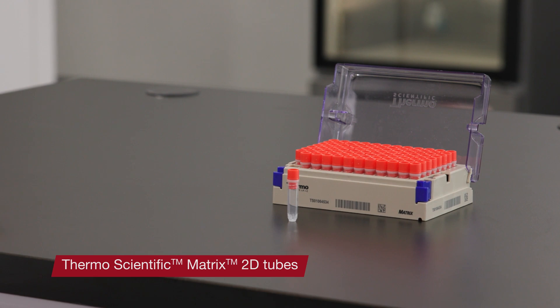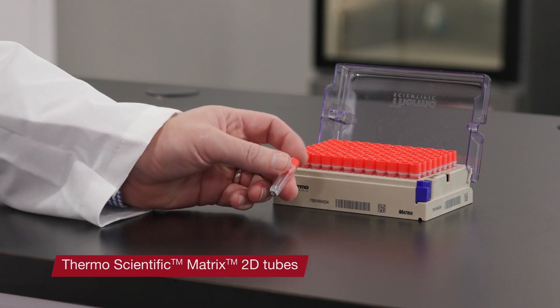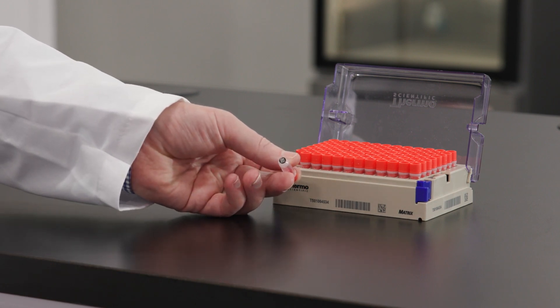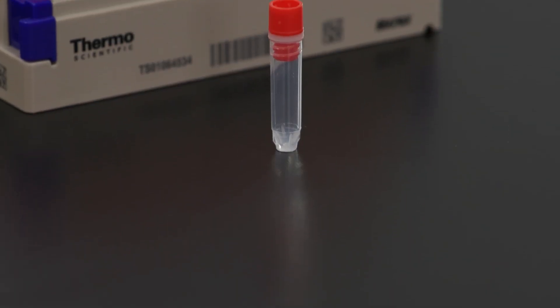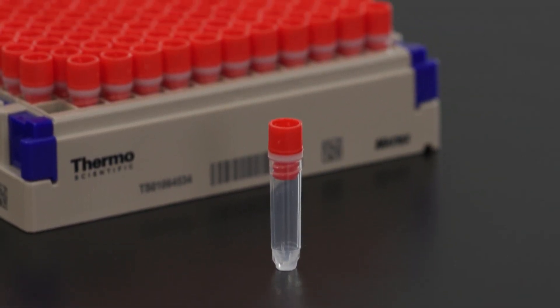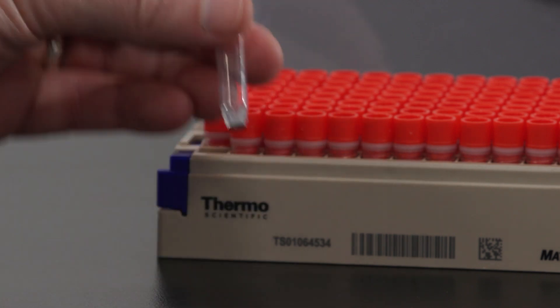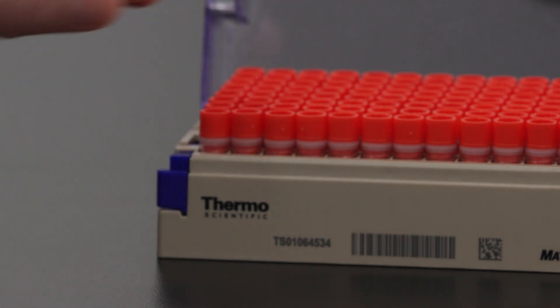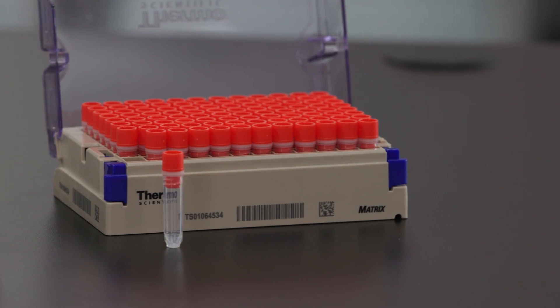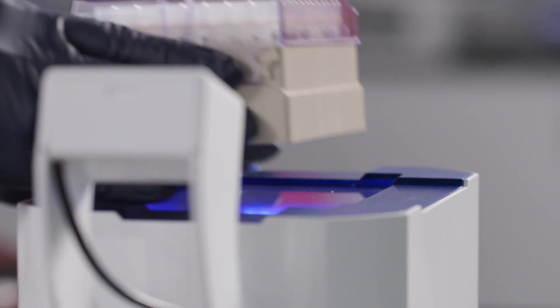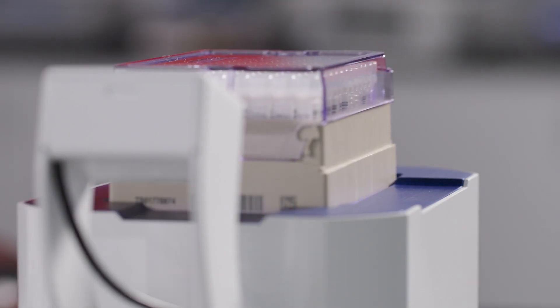The final racks we'll be discussing today are specialty racks that couple with the ThermoScientific Matrix 2D tubes. If you're looking for a secure traceable solution, the Matrix 96 format 2D barcode storage tubes that are specifically designed to be stackable with an attached lid fit nicely into any automated liquid handling system and high throughput application.